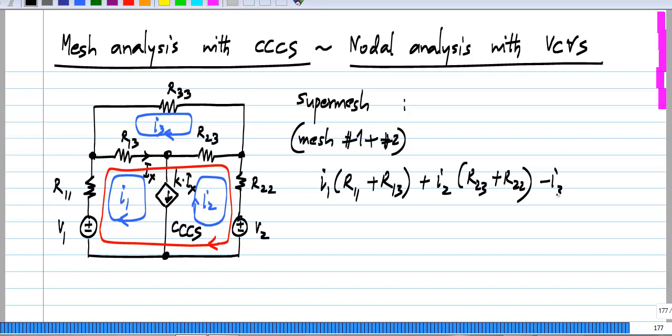And I3 goes through R23 and R13 in the opposite direction. So, we will have minus I3 times R13 plus R23 and this whole thing equals the voltage rise which is V1 minus V2. So, this is the equation for the super mesh.